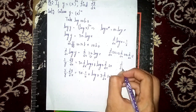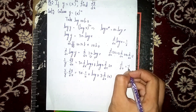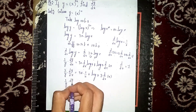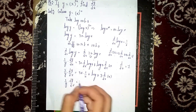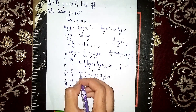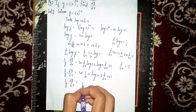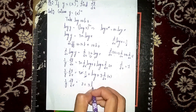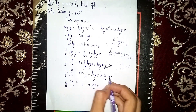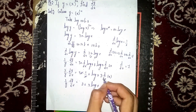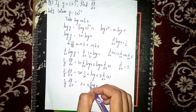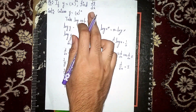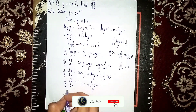Now d/dx of x is equal to 1. So we get (1/y) dy/dx equals 3 plus 3 log x. The 3x times 1/x simplifies: x cancels, giving 3. Then 3 into log x is 3 log x.